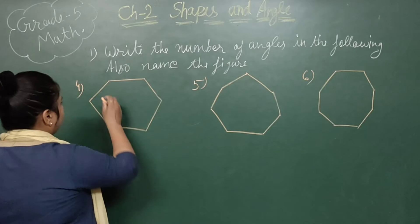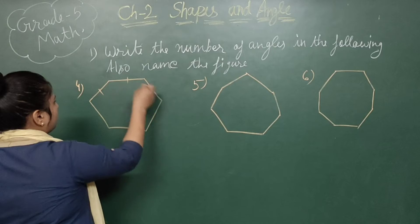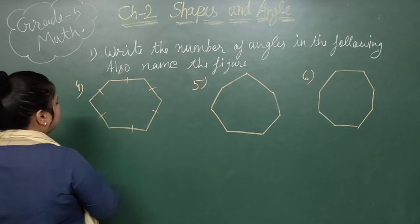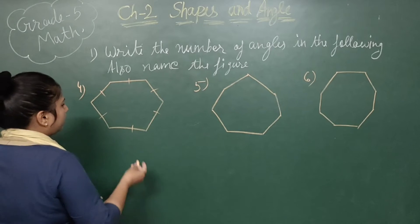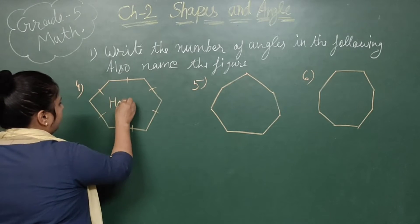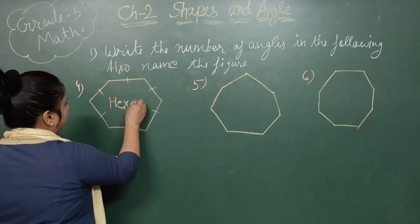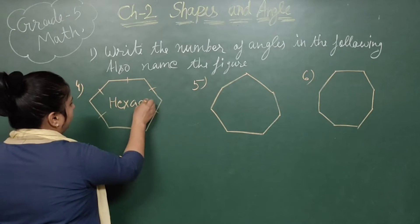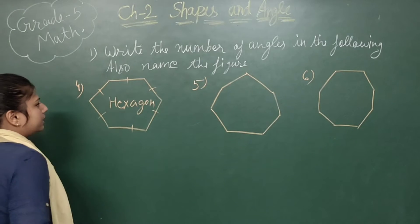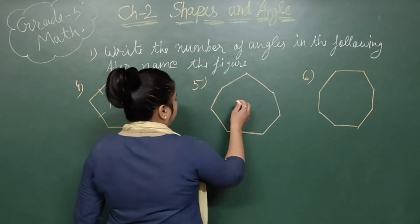Now this shape is having one, two, three, four, five, six sides. It means hexagon — six sides, six angles — hexagon.